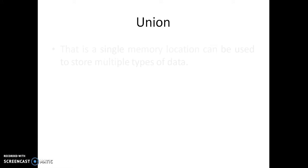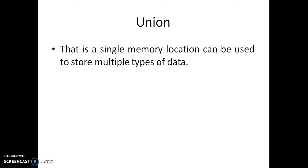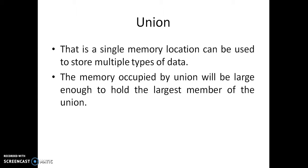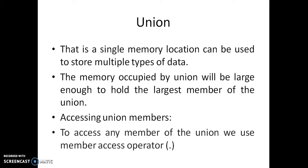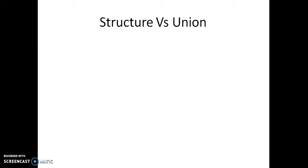A union uses a single memory location to store multiple types of data. At some time we store an integer there; at other times a floating point number; at other times a character array — all in the same memory location. The memory occupied by a union will be large enough to hold the largest member of the union. To access union members, we use the dot operator, exactly as we access members of a structure.